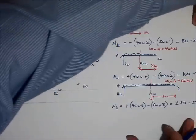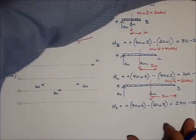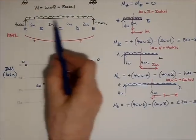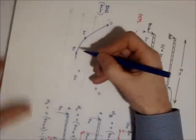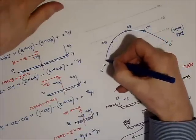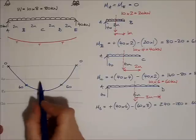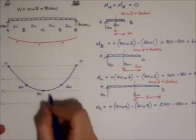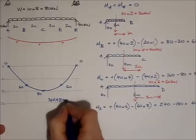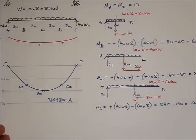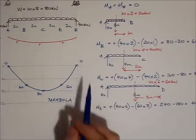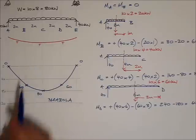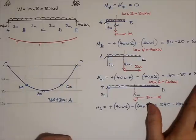Now I'll draw a smooth curve joining up these points — and it's going to be a curve because there's a UDL along the length of the beam. The resulting shape is a parabola. Whenever you have a UDL on a simply supported single-span beam, you end up with a parabolic bending moment diagram, drawn on the bottom because that's the tension face. And that's the end of the tutorial — thank you very much for watching.